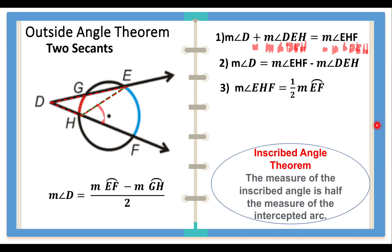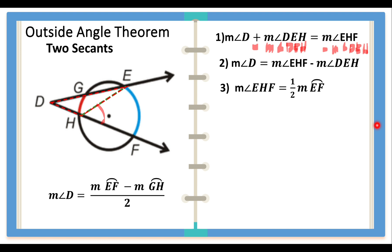Likewise, applying the same inscribed angle theorem, we take a look at another inscribed angle. From statement number two we need angle DEH, which is the yellow angle that is marked. It is equal to one-half the measure of its intercepted arc. The arc opposite that yellow angle is the red arc, which is arc GH. So statements three and four are both justified by the inscribed angle theorem.